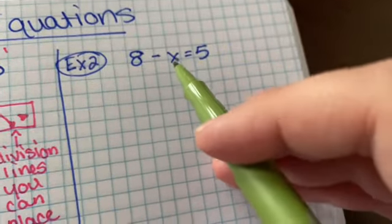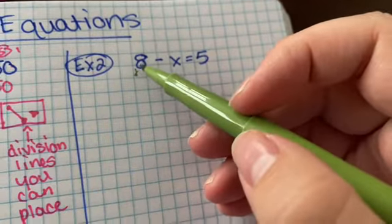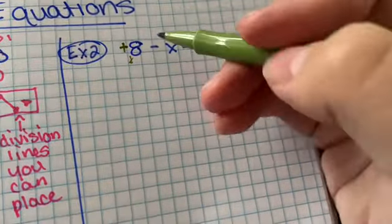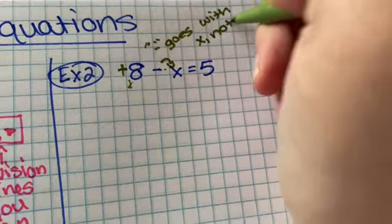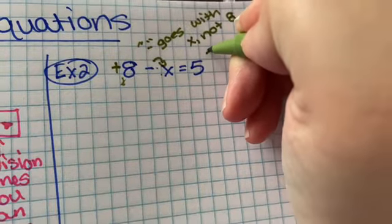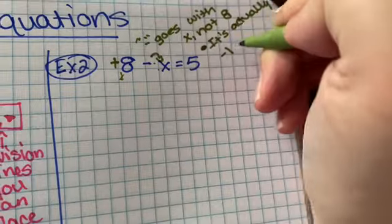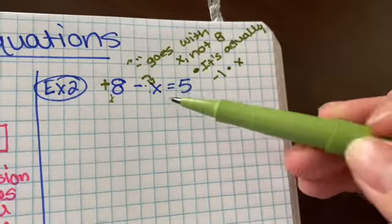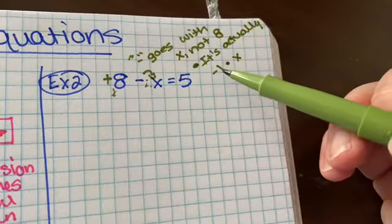So I like these examples because on first hand this looks like a one-step equation, but this is technically still two-step. The eight here is positive, so it's a positive eight. This negative, put that in parentheses, negative goes with negative 6x, not eight. So what this means is that it's actually negative one times x. So remember, all variables that don't have a number in front of it, there's always a one. This is just a negative one, so we're going to have to get rid of that later.